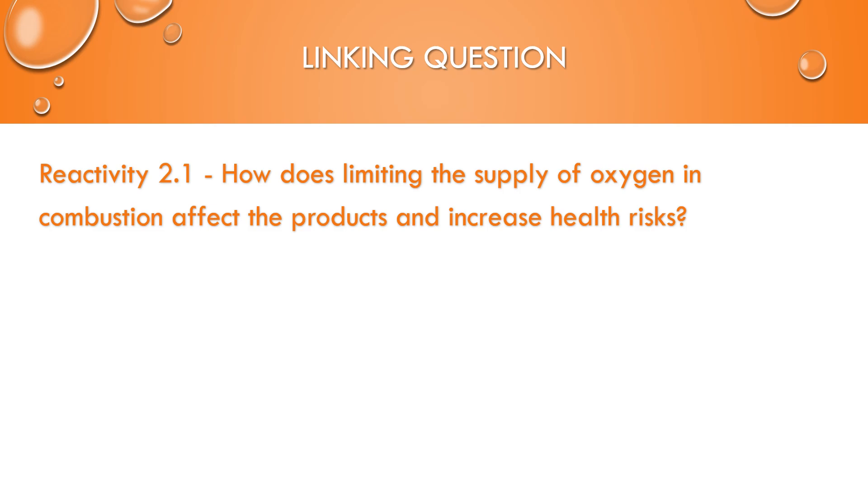Now, this also links to reactivity 2.1, limiting the supply of oxygen in combustion affects the products and increase health risks. So the products, instead of CO2 only, it could be carbon monoxide or carbon. And carbon monoxide is a poisonous gas, so much so that we need carbon monoxide detectors in our homes. So if you are burning fuels to heat your homes or cook your food, you're detecting whether this poisonous gas is being produced at a high enough level for it to be dangerous. So we need to make sure that if you are burning fuels such as those, you have a way to remove the carbon monoxide or that it is somehow completely combusting. So those are the health risks that we're talking about.